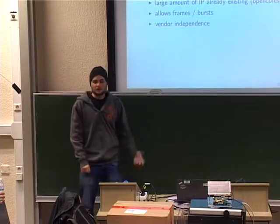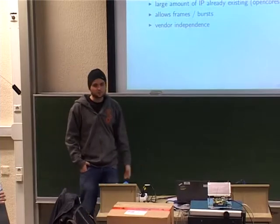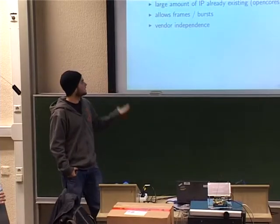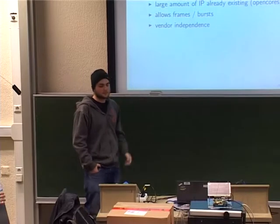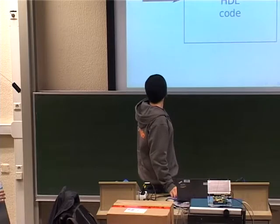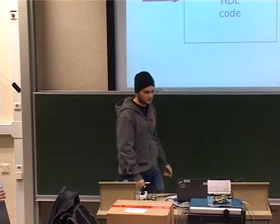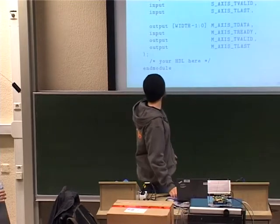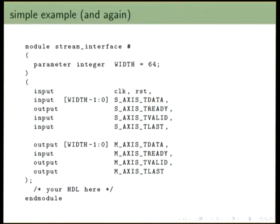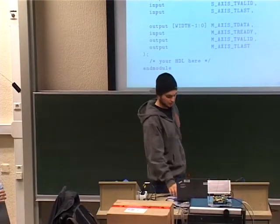You have a large amount of IP already on OpenCores and GitHub, also proprietary ones from Xilinx. It allows for frames and bursts, and it's vendor-independent, so it also works on other FPGAs. So, going back to the simple example: the Verilog boilerplate for this looks like this. Basically, this is the input description and module, and here you write what you actually want to do with the samples. The simplest case would be to just connect it and do nothing — that wouldn't be useful, but yeah. It's really not a lot of boilerplate, and you can auto-generate that.